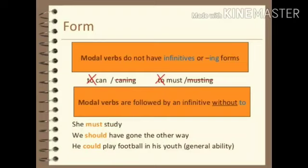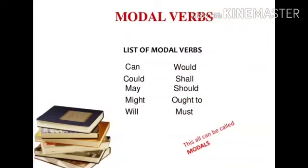With modal auxiliaries, we cannot use the -ing form of the base verb, and we cannot use infinitives with 'to'. We use bare infinitives — infinitives without 'to'. For example, 'she must study' is correct. We cannot say 'she must studying' or 'she must to study'. The correct sentence is simply 'she must study'.